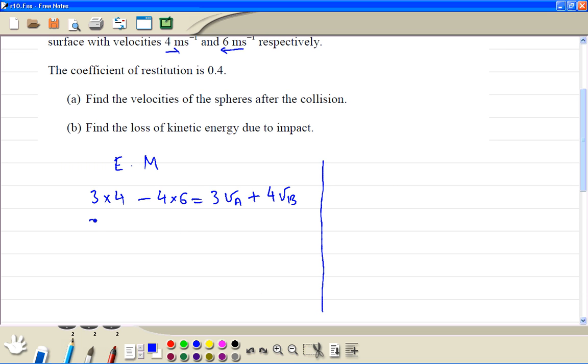So we write here 3A, the velocity of A, plus 4 times the velocity of B. This is 12 minus 24, which is minus 12. So this is our equation 1.